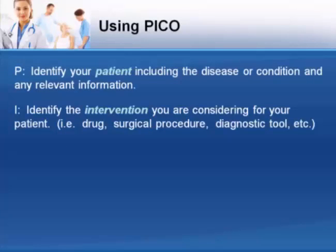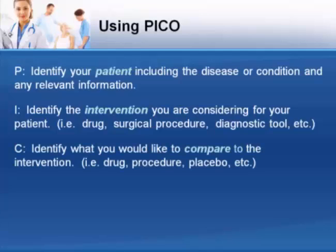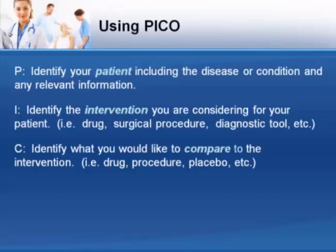Is the intervention a drug, a surgical procedure, a diagnostic test? Then describe the main alternative being considered for comparison — is it a different drug or procedure, no treatment, a placebo? Next, identify the outcome you are concerned about. Is it symptom control, reduced mortality, accurate and timely diagnosis? Finally, consider what type of clinical question you have. This becomes important when you must determine which resources to use for your literature search.